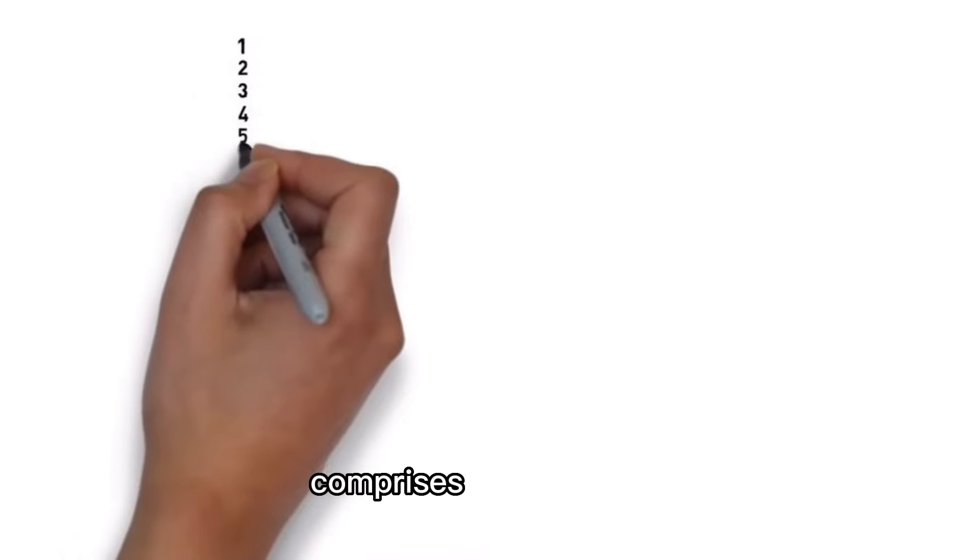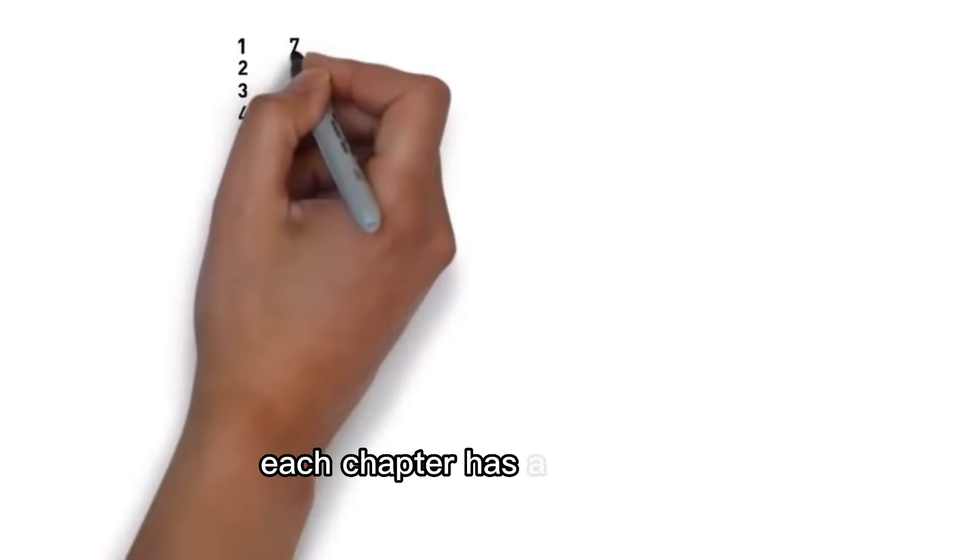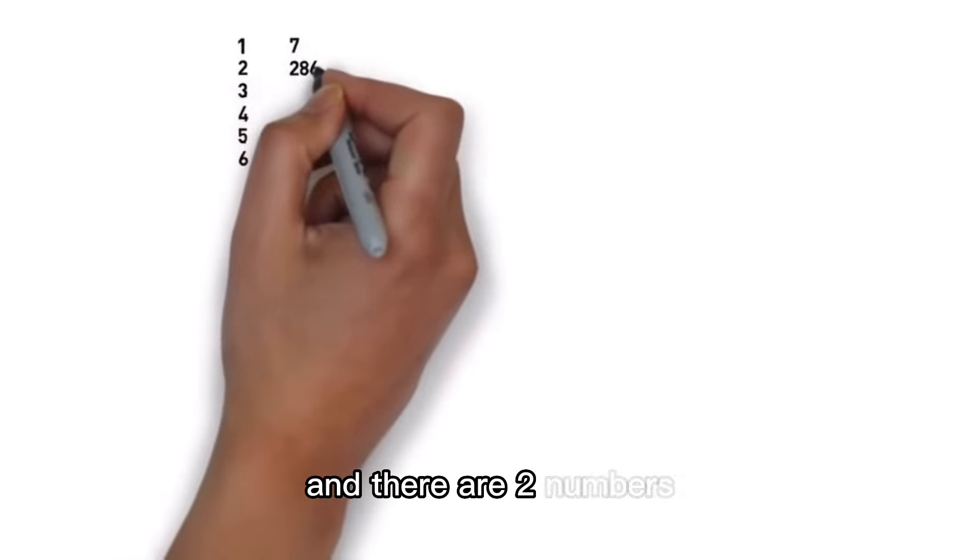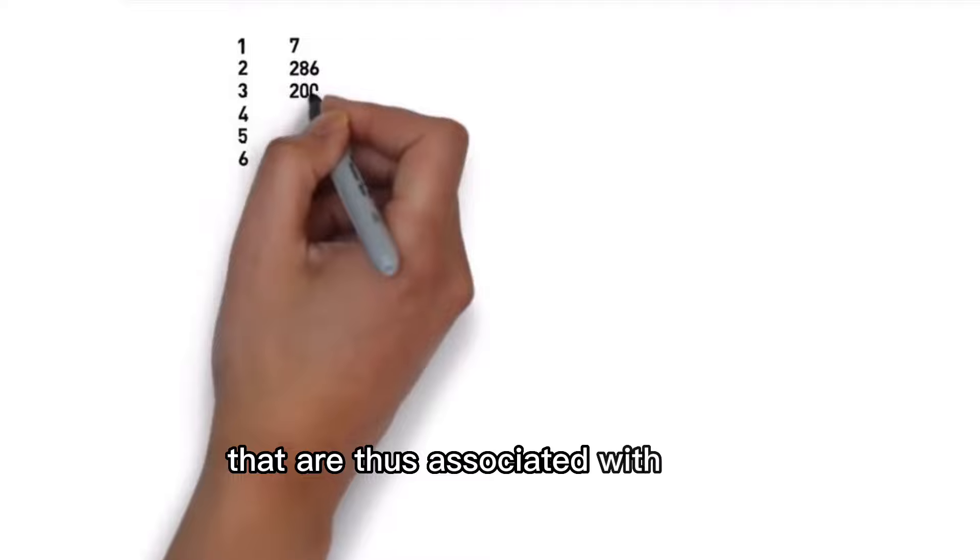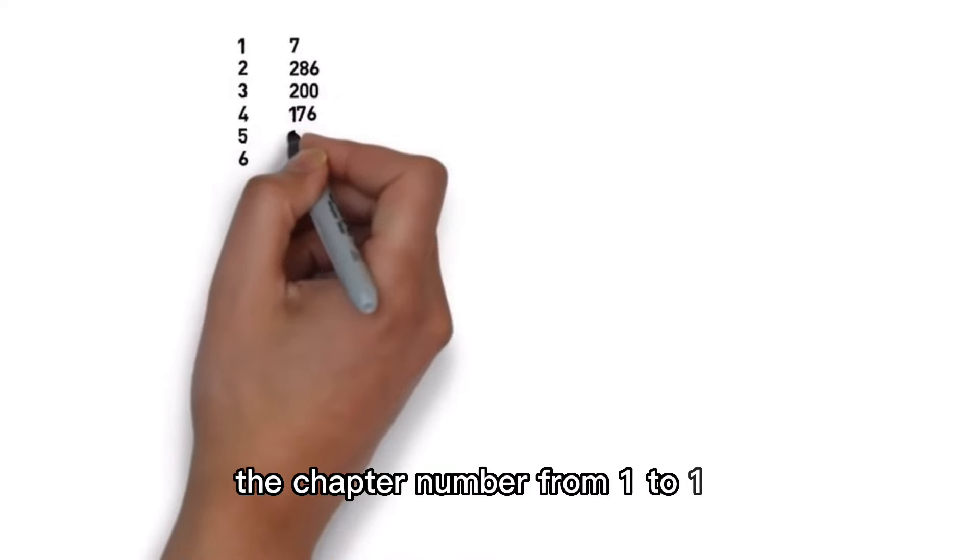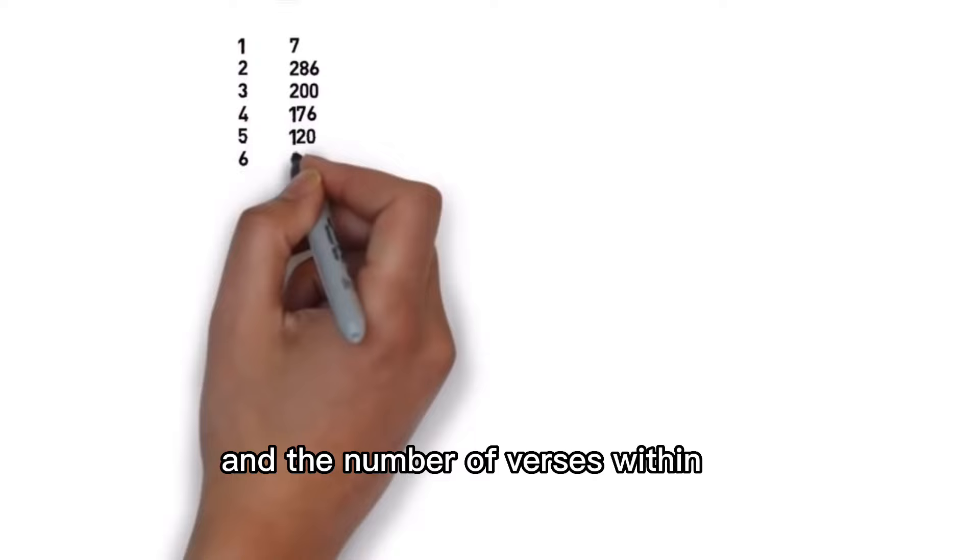The Quran, as Jay said, comprises 114 chapters. Each chapter has a number of verses. And there are two numbers that are thus associated with each chapter: the chapter number, from 1 to 114, and the number of verses within the chapter.